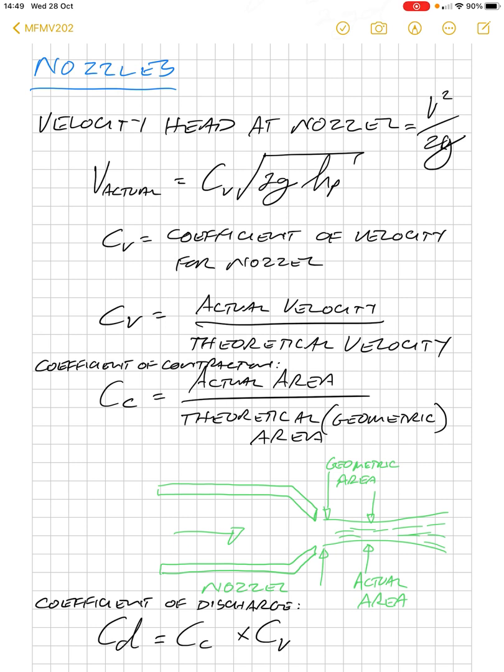So, our coefficient of velocity is calculated by taking the actual velocity in the nozzle, divided by the theoretical velocity that you would expect.